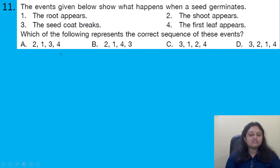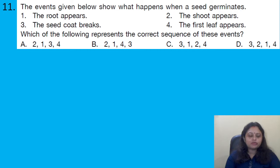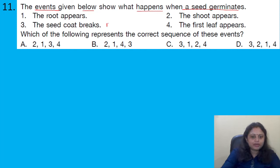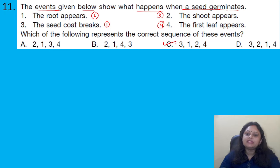Arrange the events in correct sequence to show what happens when a seed germinates. Events: 1 – the root appears, 2 – the shoot appears, 3 – the seed coat breaks, 4 – the first leaf appears. First, the seed coat breaks. Then the root appears. Then the shoot appears. Finally, the first leaf appears. So the sequence is 3, 1, 2, 4. The correct answer is option C.